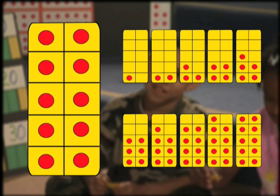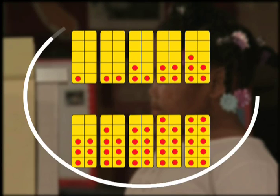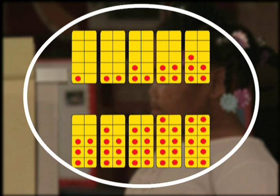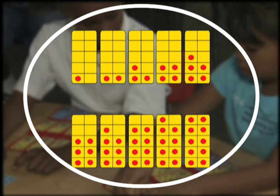Patterns of dots and empty squares show number parts within ten. This model helps children see patterns and relationships essential to powerful number sense.